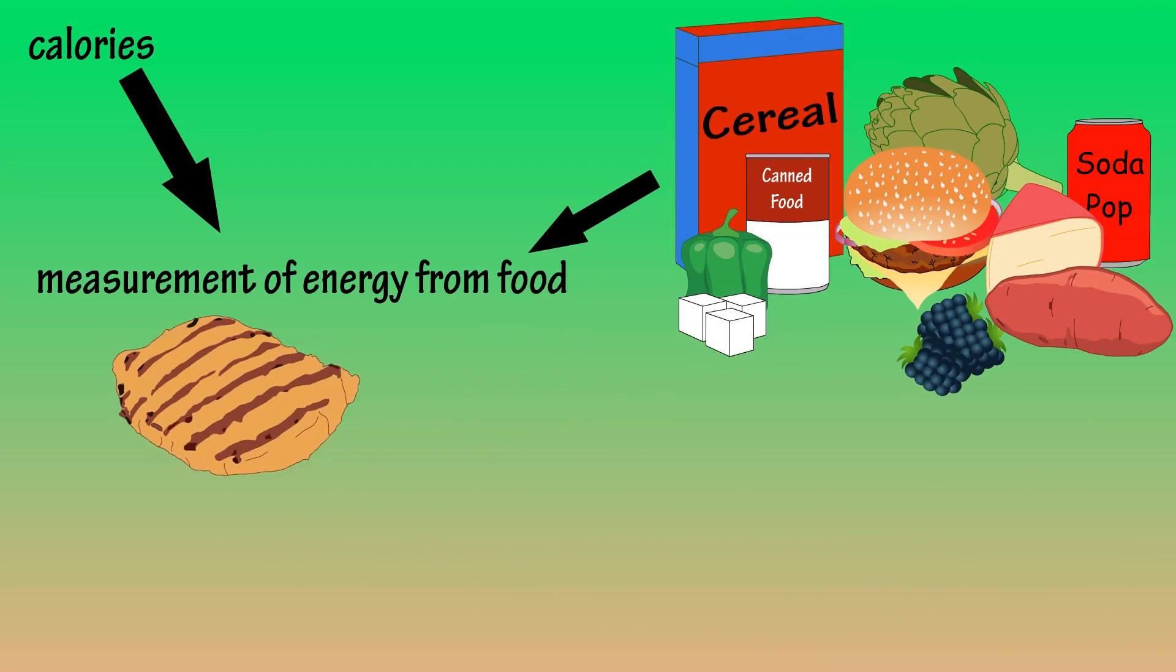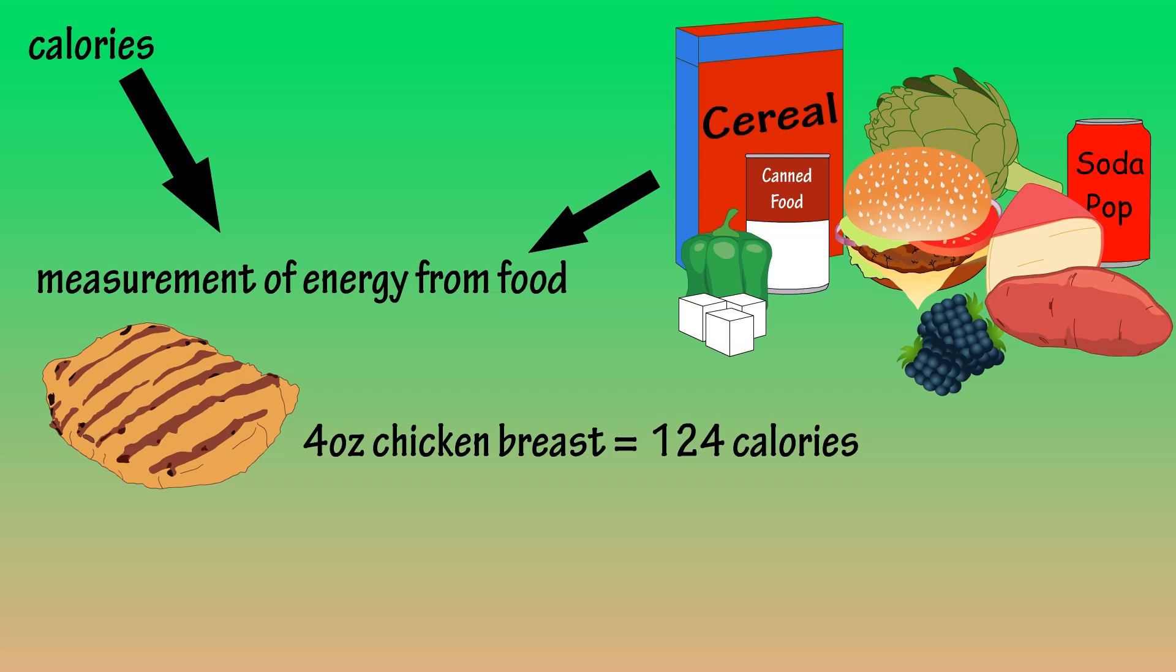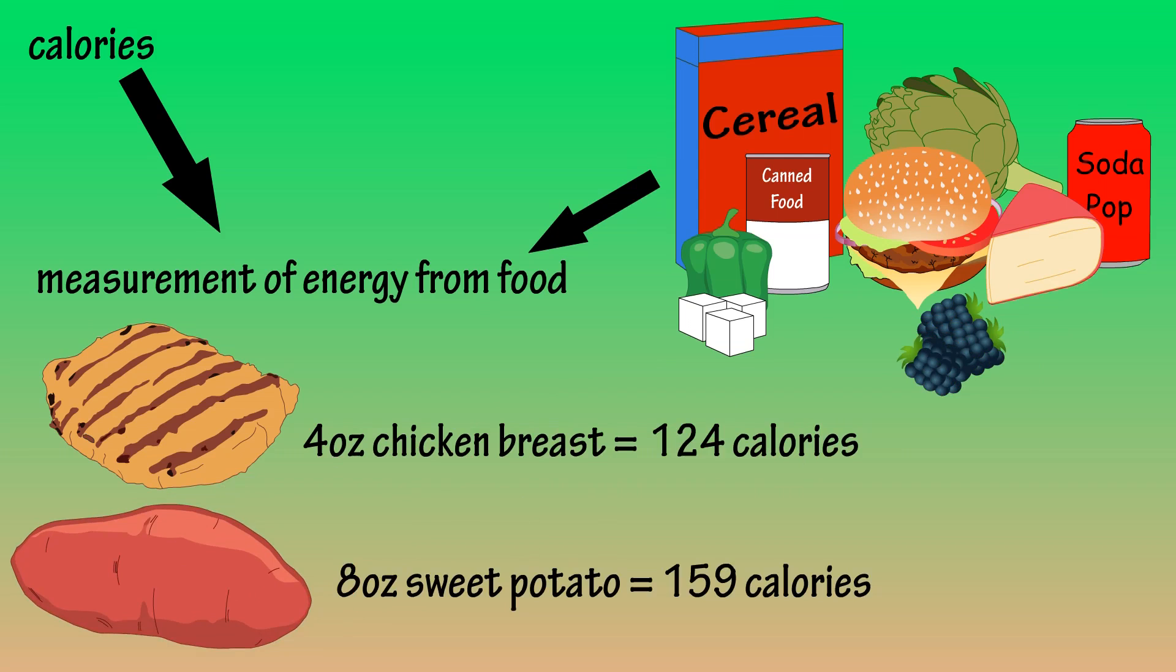For instance, a 4-ounce chicken breast would provide about 124 calories, and an 8-ounce baked sweet potato would provide 159 calories.